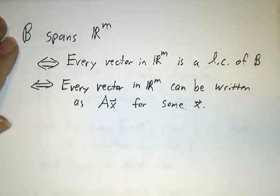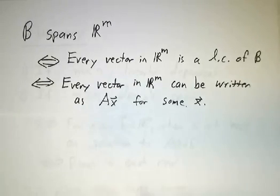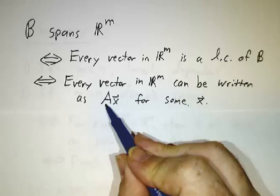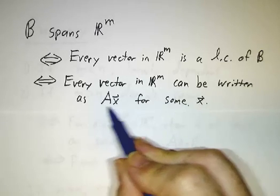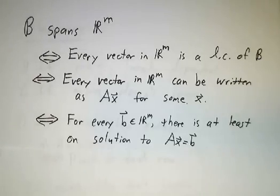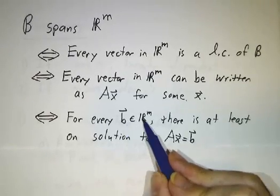Well, that means every vector can be written as Ax for some x because the x's are the coefficients and the columns of A are the vectors that you're taking linear combinations of. Well, that means that no matter what vector you pick in R^m, you can find a solution to Ax equals b.